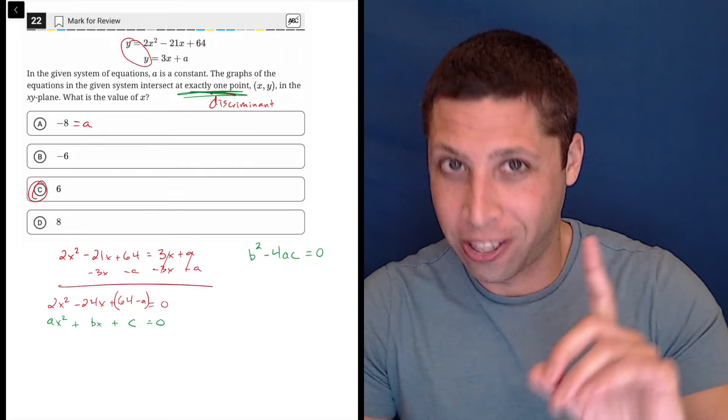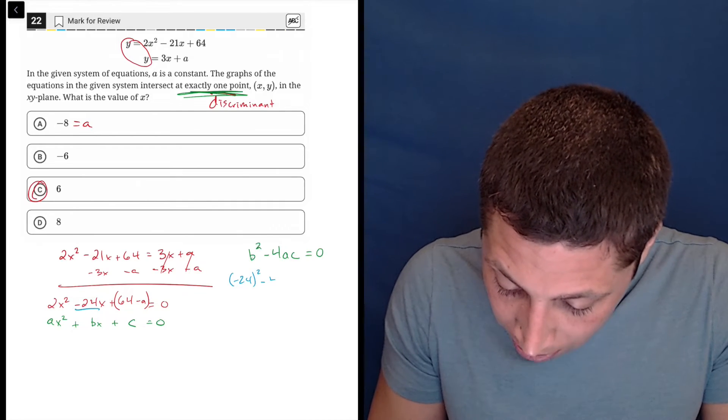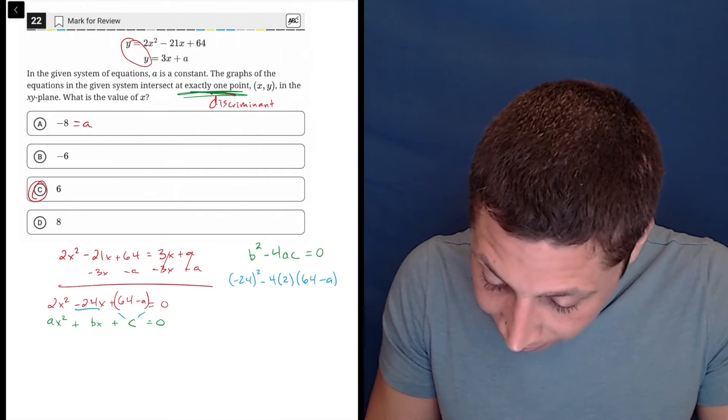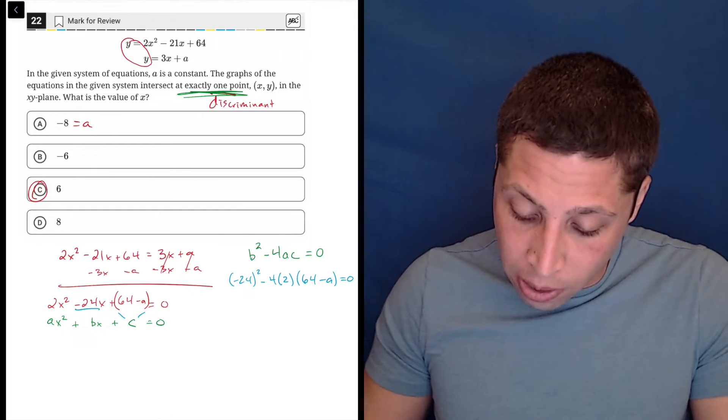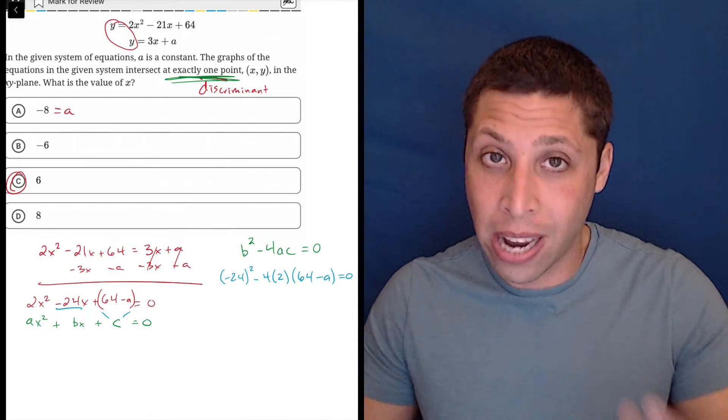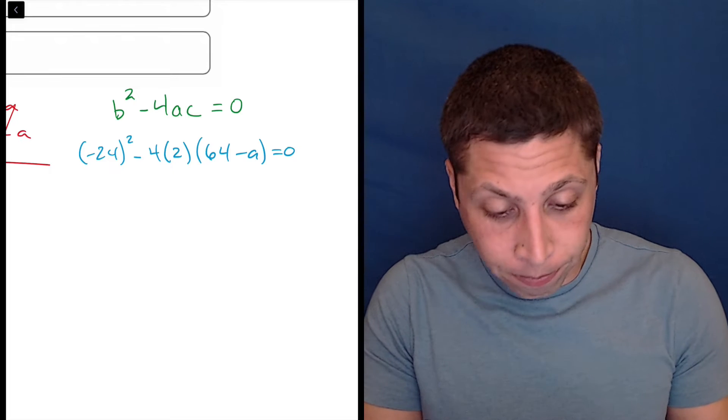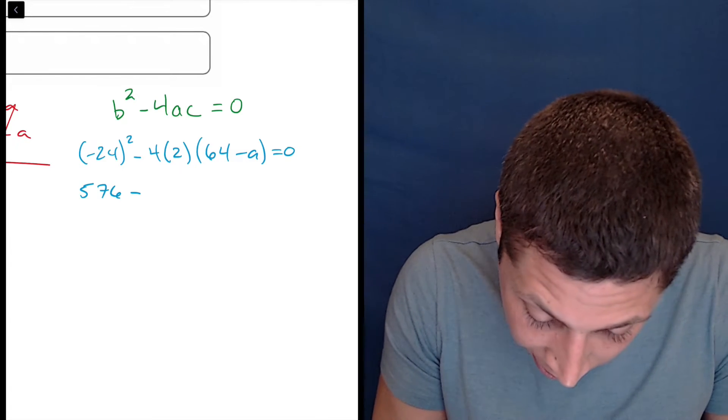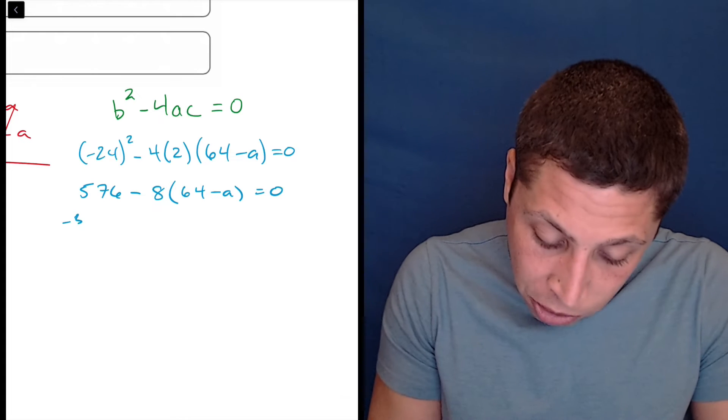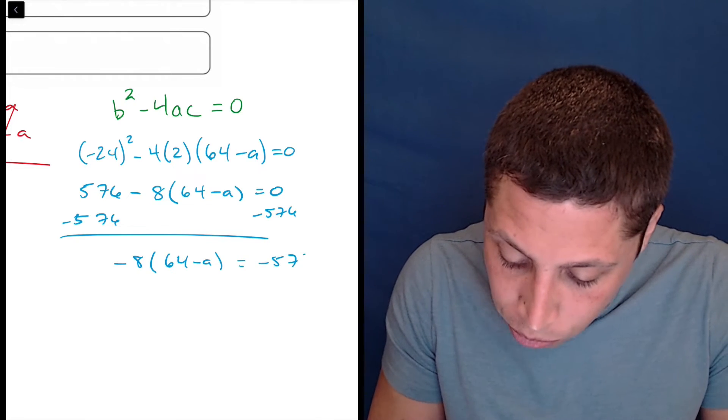So what I'm going to do is I'm going to fill in b, a, and c based on the equation, not based on the a that I have that's in the equation. That's a little bit of a trick here. So b is negative 24, so negative 24 squared minus 4, a is 2. And c, this is why I put those parentheses, is this whole thing, 64 minus a. Now let's start cleaning it up. And you can notice that what just happened is I went from having an equation with lots of variables, an a and an x and all these different things, and now I just have one, right? So now I can solve for a using this equation. So, 24 squared, we're going to bring out our calculator. 24 squared is 576 minus, let's just do 8, 64 minus a. And let's start kind of bringing things over, so we'll subtract the 576.